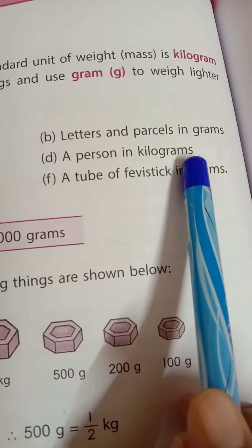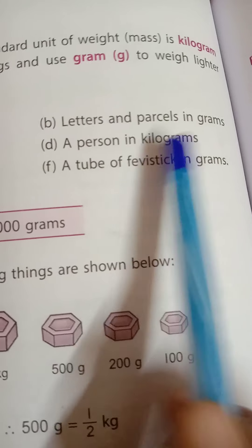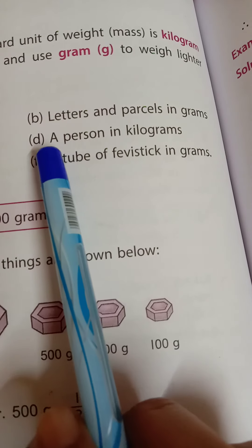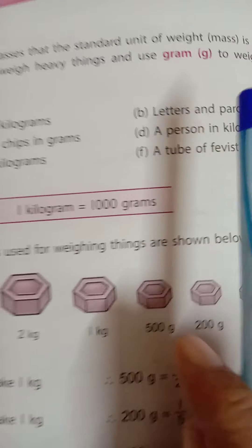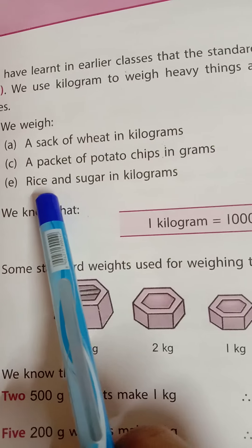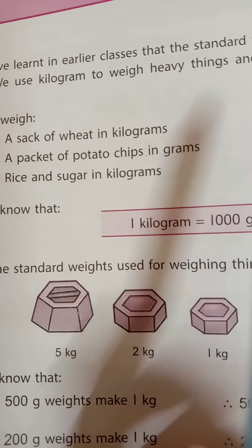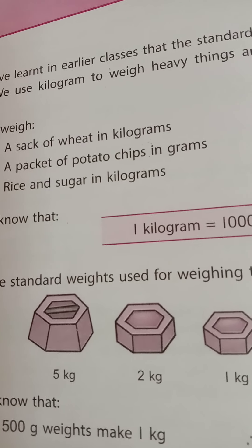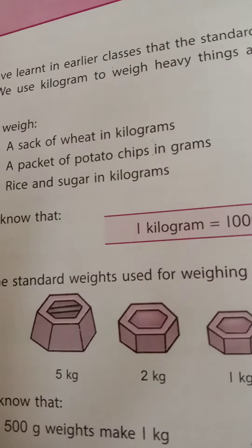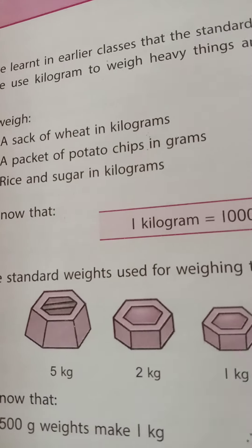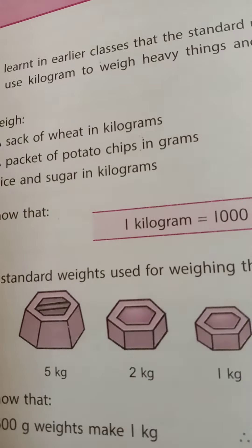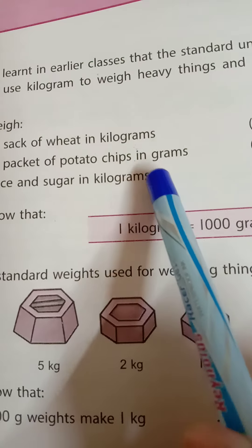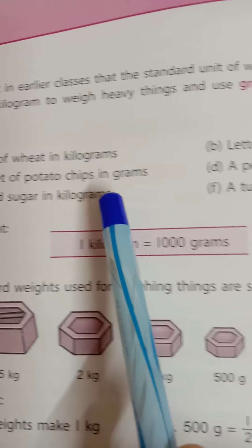A person is weighed in kilograms — we measure our body weight in kilograms. Rice and sugar are also weighed in kilograms. Whenever we go to the market or shop to buy groceries, we weigh things like rice and sugar in kilograms because they are heavy in weight.